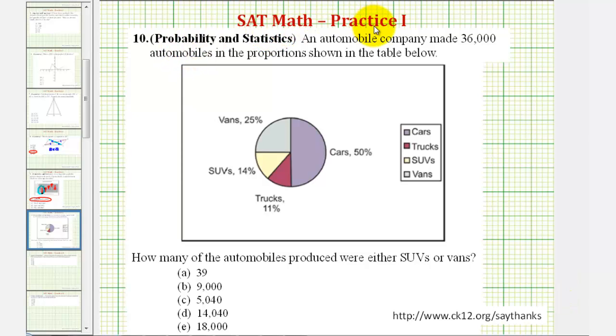Welcome to a practice SAT math question from the probability and statistics section. An automobile company made 36,000 automobiles in proportions shown in the table below.